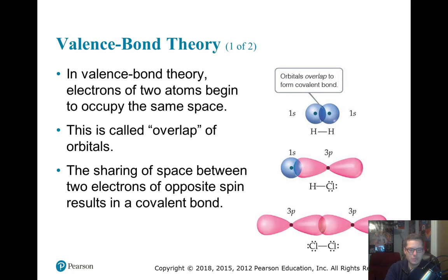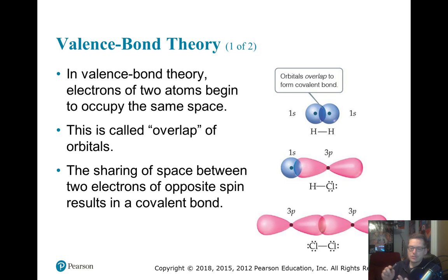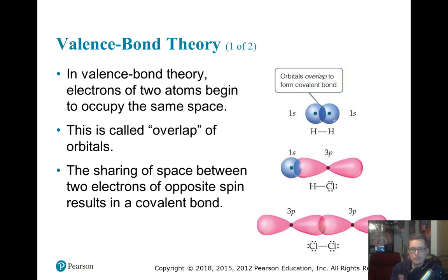All right, gang, here we go. This is Chem 2 Unit 5. We're talking about hybridization and sigma versus pi bonds today.